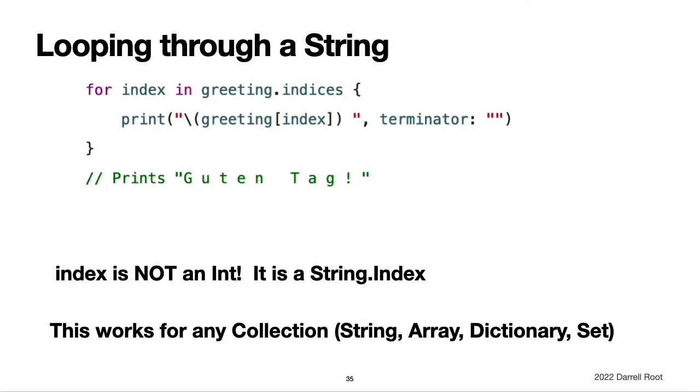Attempting to access an index outside of a string's range or a character at an index outside of the string's range will trigger a runtime error. Use the indices property to access all of the indices of individual characters in a string. Note: you can use the startIndex and endIndex properties and the index(before:), index(after:), and index(_:offsetBy:) methods on any type that conforms to the Collection protocol. This includes String, as shown here, as well as collection types such as Array, Dictionary, and Set.